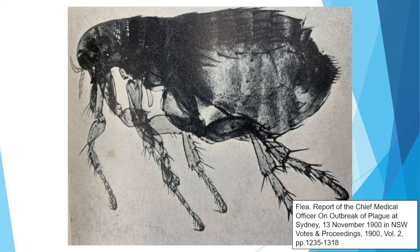Transmission of the bacteria happens when a flea bites an infected host, becoming infected itself. The bacteria blocks the flea's stomach, and when that flea bites a mammal, the bacteria is injected into that mammal's bloodstream. It's been noted that any serious outbreak of plague in humans is preceded by an outbreak in the rodent population. When there are fewer rodents around due to their deaths, the fleas seek other sources of food, like people.